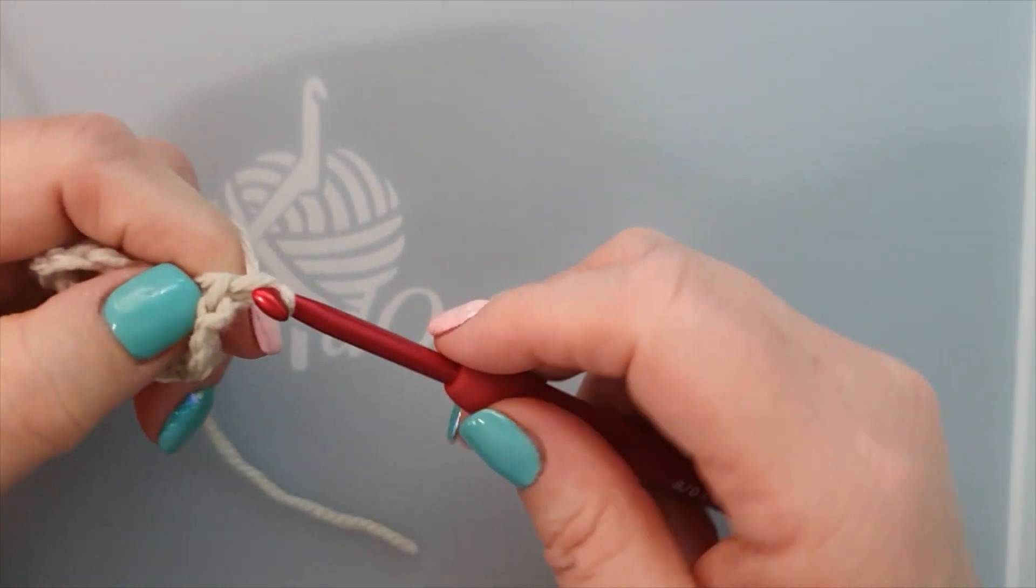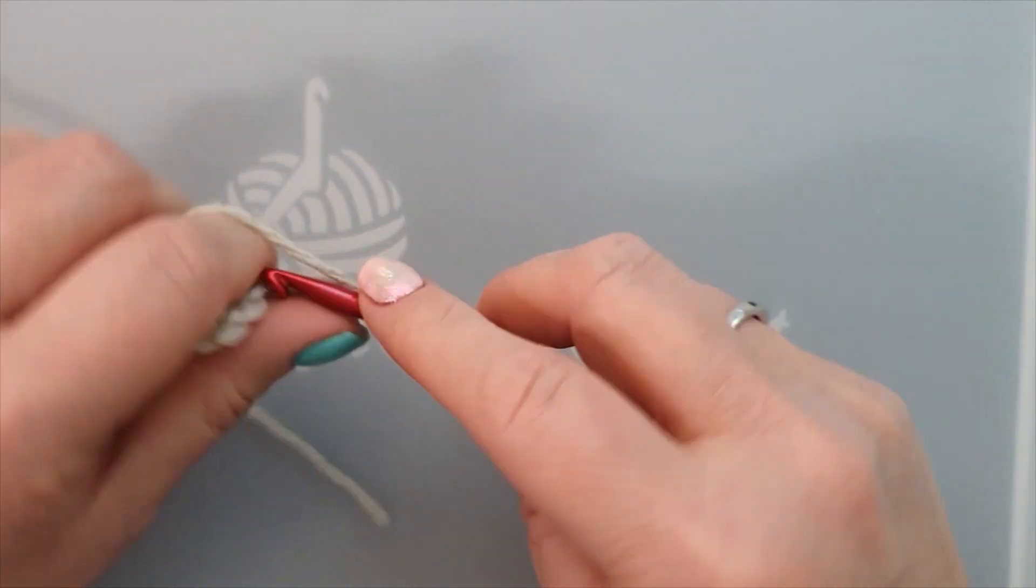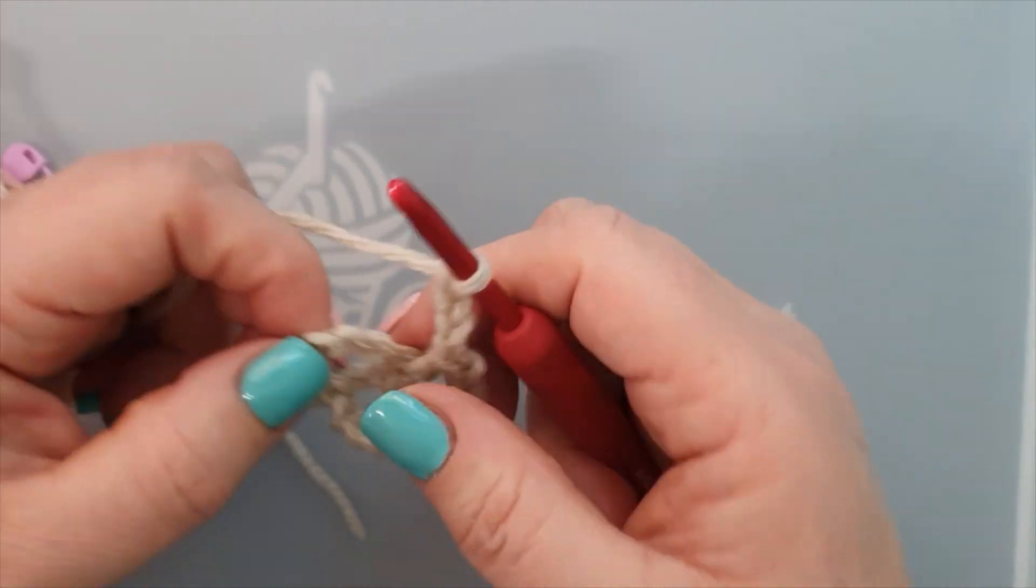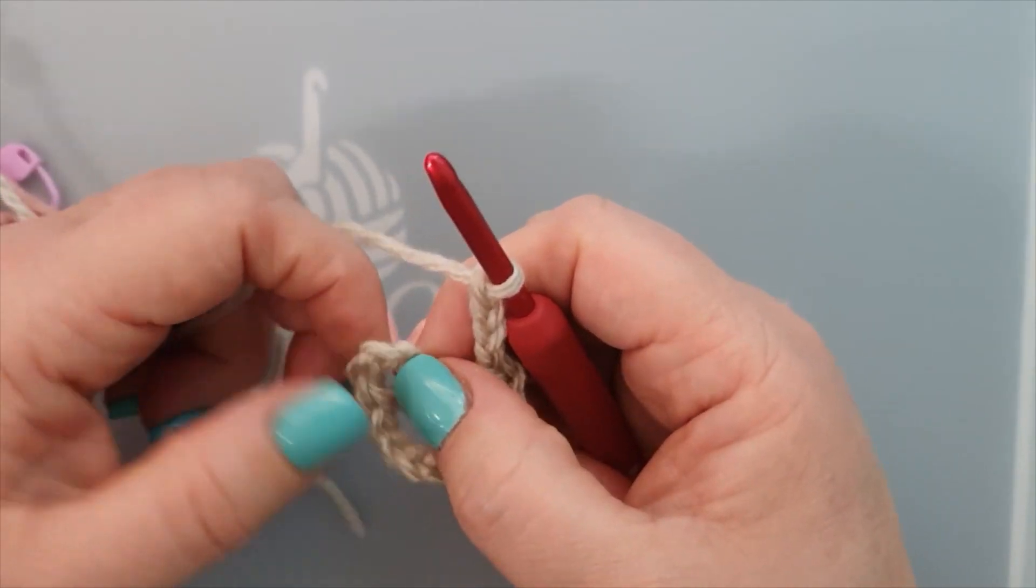And then you make your corner, one, two, three, and then you join your slip stitch here, one, two, in the second, one, two, here.